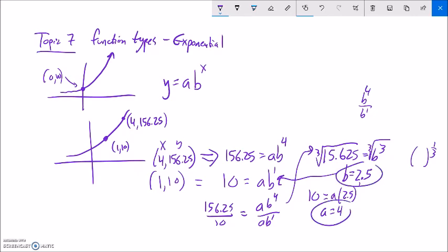So a is 4 when b is 2.5. So my equation for this would be y equals 4 times 2.5 to the x power. Great. And notice when it's exponential, x is in the exponent. And that 4 is actually that value right there, too. Yup, that's where it crosses.